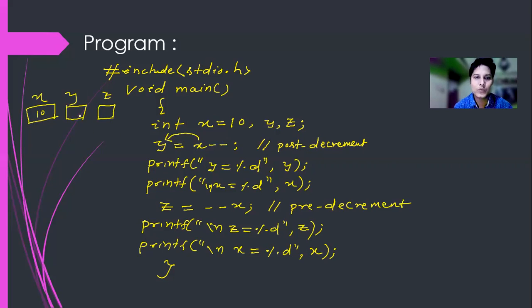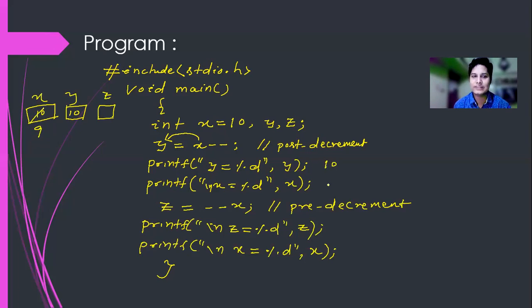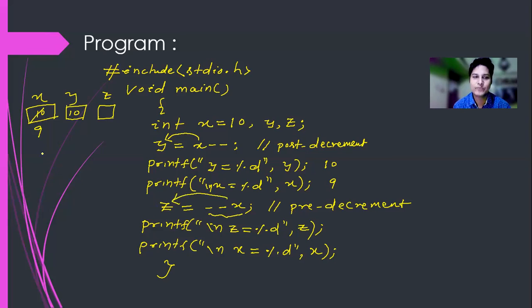So what will be the value of y? The value of y will be 10. Then x is decremented by 1, so x becomes 9. This statement prints y as 10 and x as 9. For z = --x, this is pre-decrement: the value of x, which is now 9, is first decremented to 8, then assigned to z. So z equals 8, and x also equals 8.